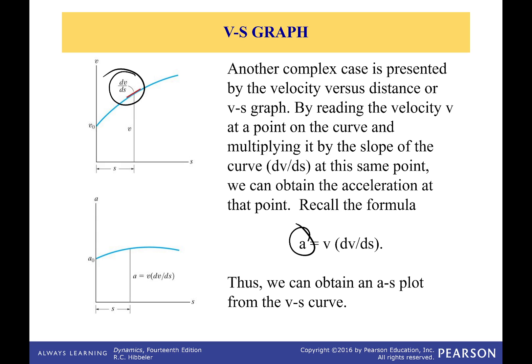So what I can find by taking the slope and then multiplying it by the velocity at that point is my acceleration. That's the key to a VS graph. It's all about finding acceleration at a particular position. So acceleration at a particular position.